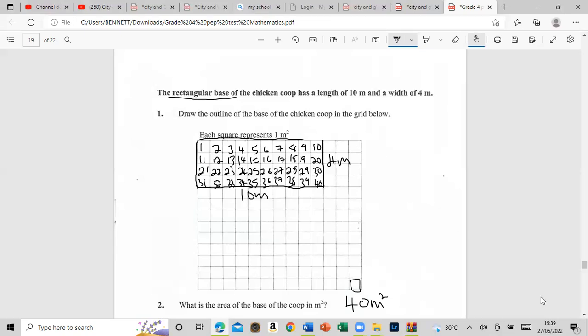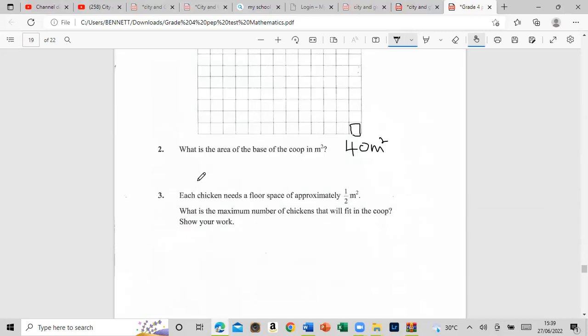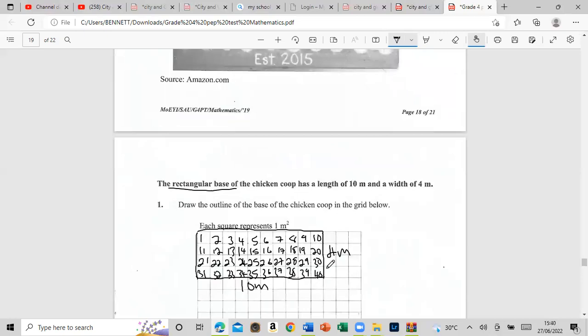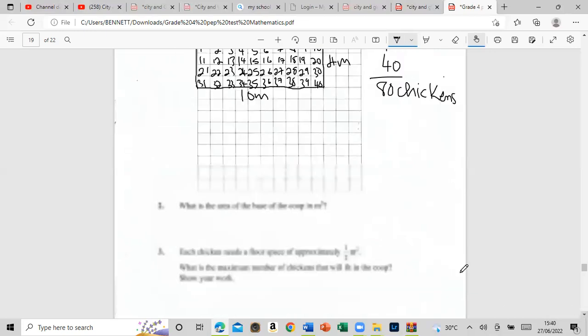Number three says each chicken needs a floor space of approximately half a square meter. What is the maximum number of chickens that can fit in the coop? This is your coop. If two chickens can hold in one box, how many would hold in forty? That's 40 plus 40, so that's 80 chickens. Or we could say 40 multiplied by 2.